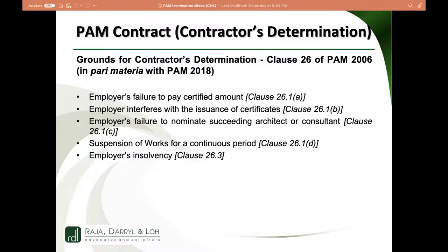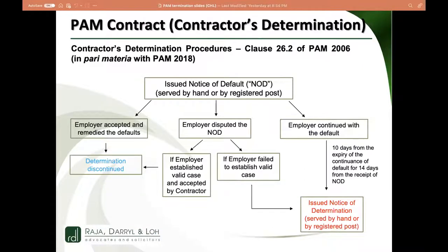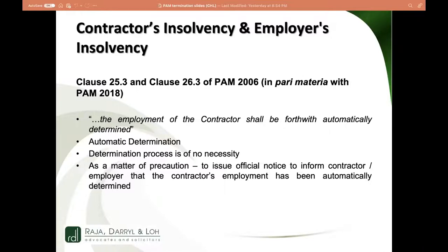The procedure for contractor's determination is almost a mirror image: you must have grounds to issue the notice of default, and if the default is not remedied, you then have the right to issue the notice of determination. In terms of contractor insolvency and employer insolvency, the difference is that for these events there is no need for the period between notice of default and determination — the determination can take place immediately, without the need to first allow the defaulting party the opportunity to remedy the default.